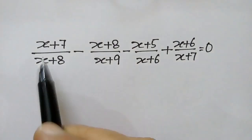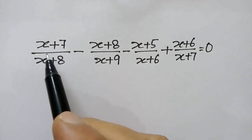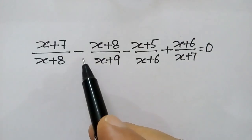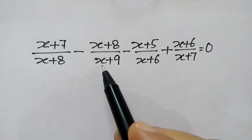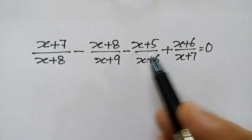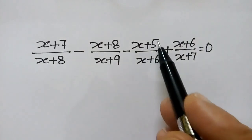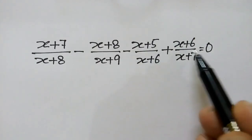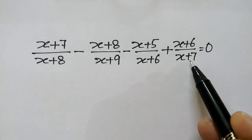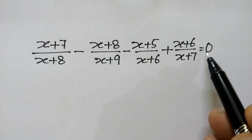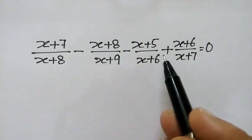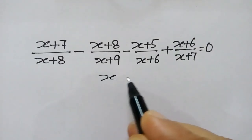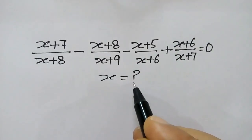Hi friends, today we have a nice equation: (x+7)/(x+8) minus (x+8)/(x+9) minus (x+5)/(x+6) plus (x+6)/(x+7) is equal to 0. We have to solve this equation, or we can say we have to find out the value of x.